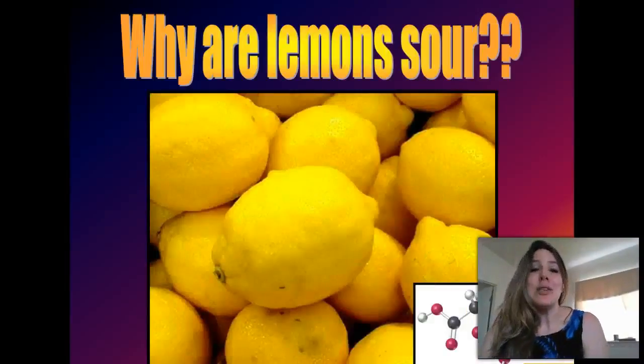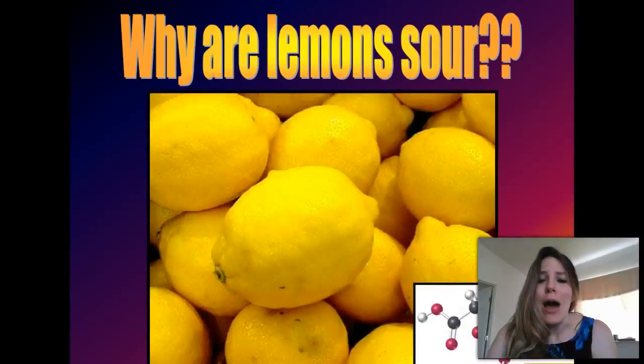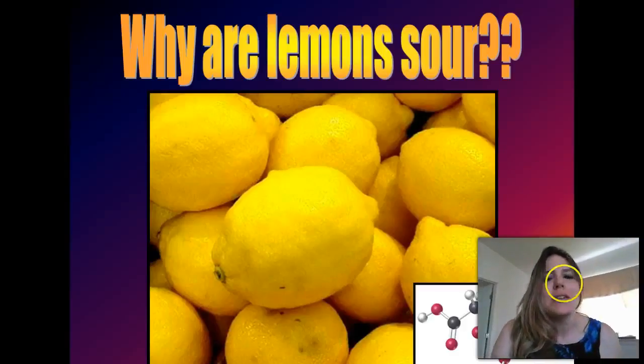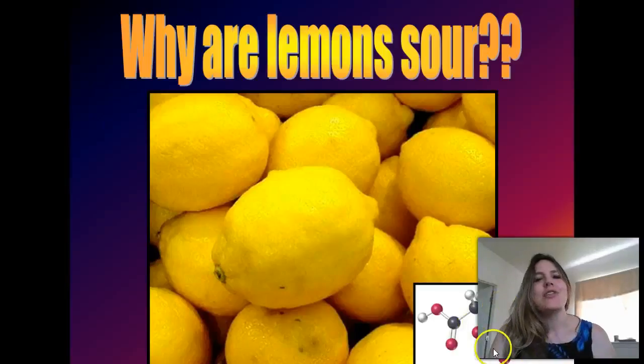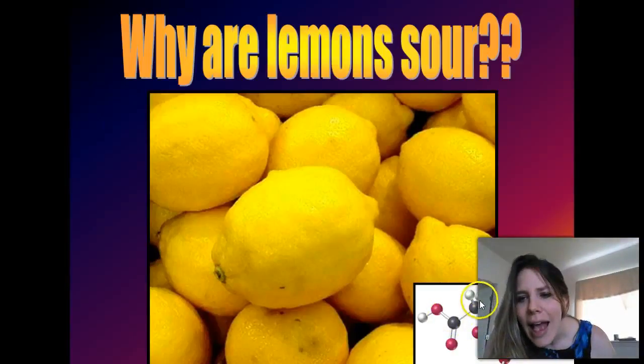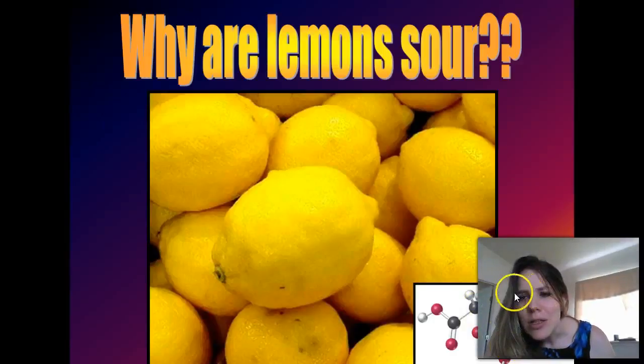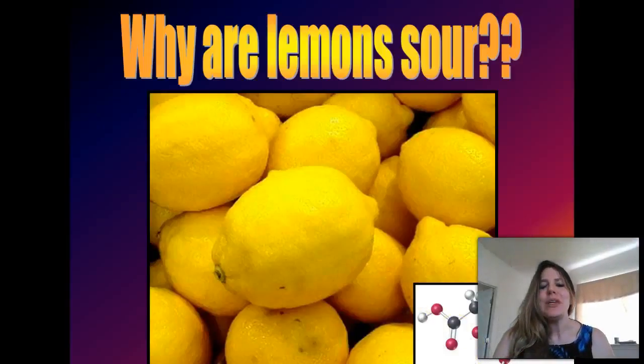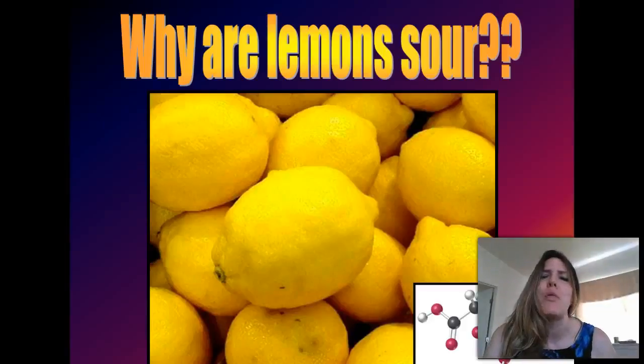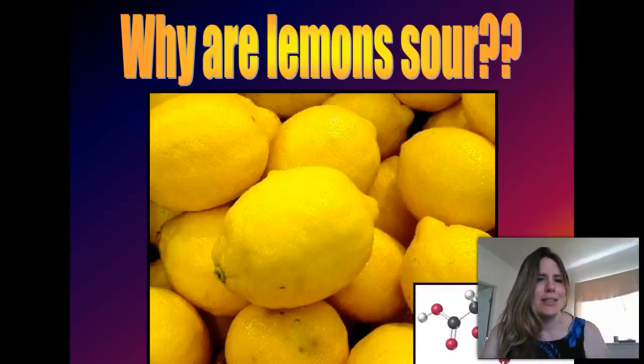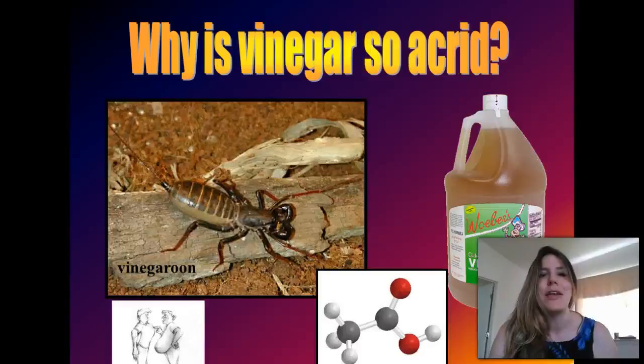So let's ask the question: why are lemons so sour? Well, they're sour because of this compound right here called citric acid. Citric acid is a compound consisting of six atoms of carbon, eight atoms of hydrogen, that's the white ones here, and seven atoms of oxygen. That compound together makes them acidic, but what does it mean to be acidic? That's what we're going to talk about right now.